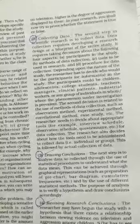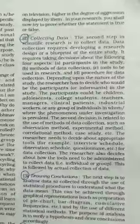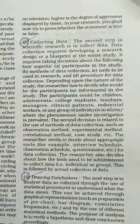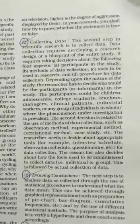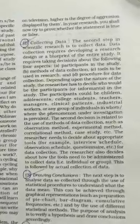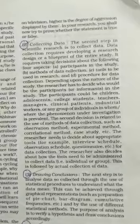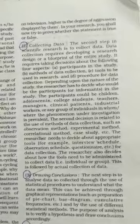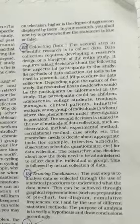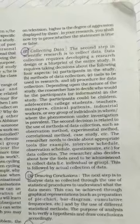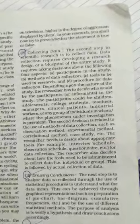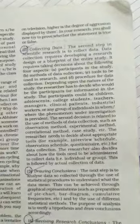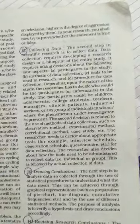This is followed by the actual collection of data. After the information has been collected using a particular method, the researcher proceeds further for drawing conclusions. The next step is to analyze the data collected through the use of statistical procedures. The psychologist or researcher uses statistical procedures to understand what the data means — through graphical representation such as pie charts, cumulative frequencies, and different statistical methods.